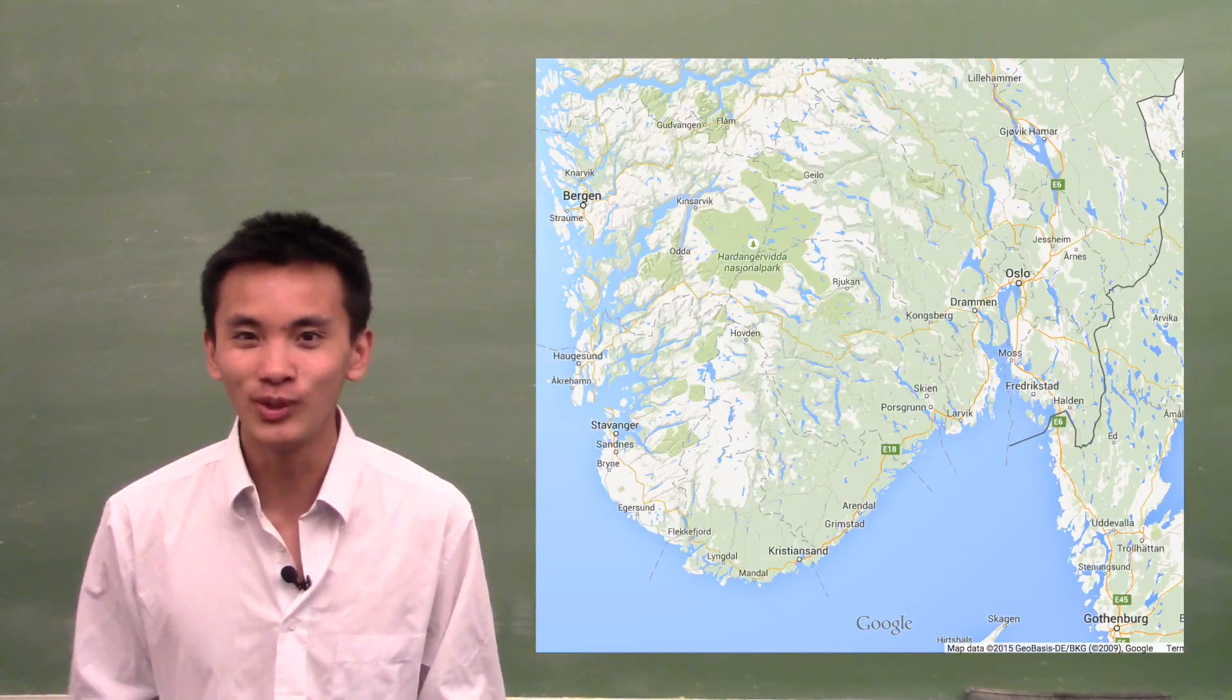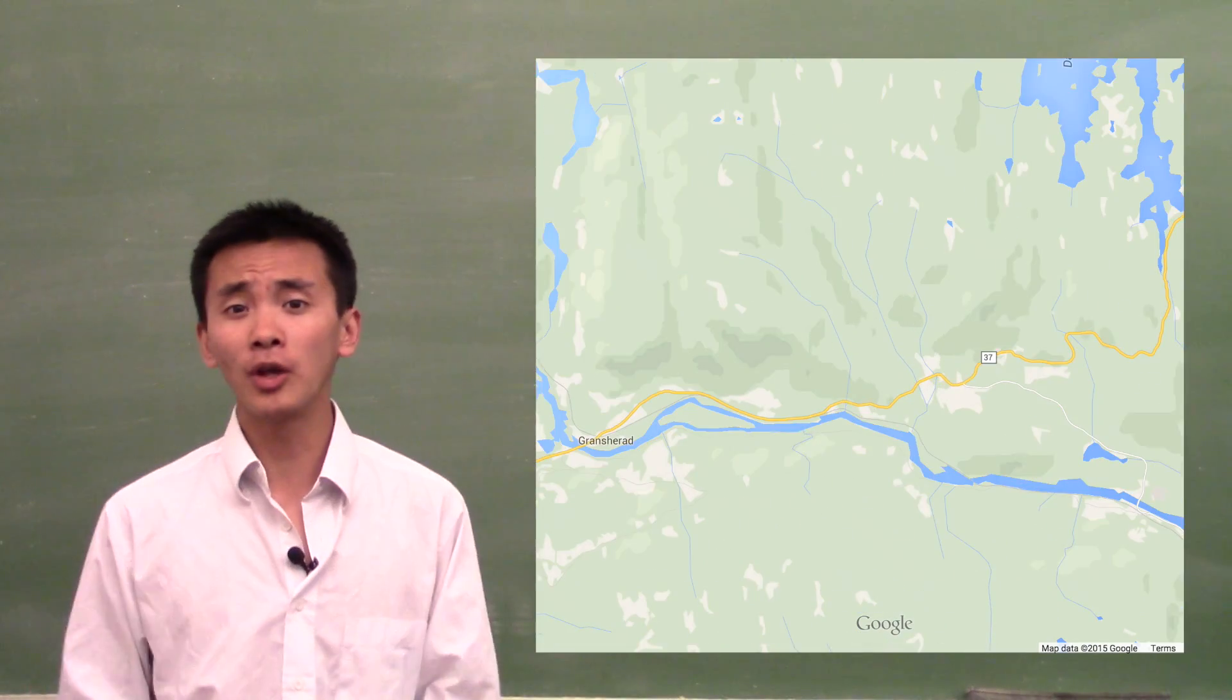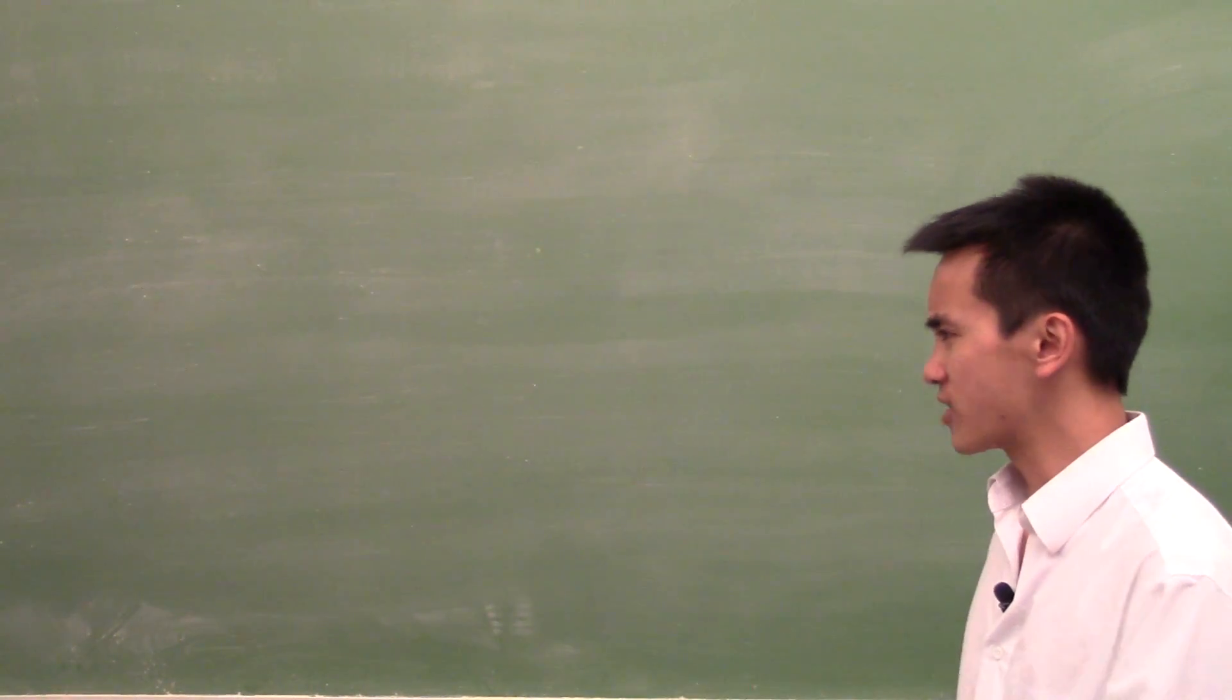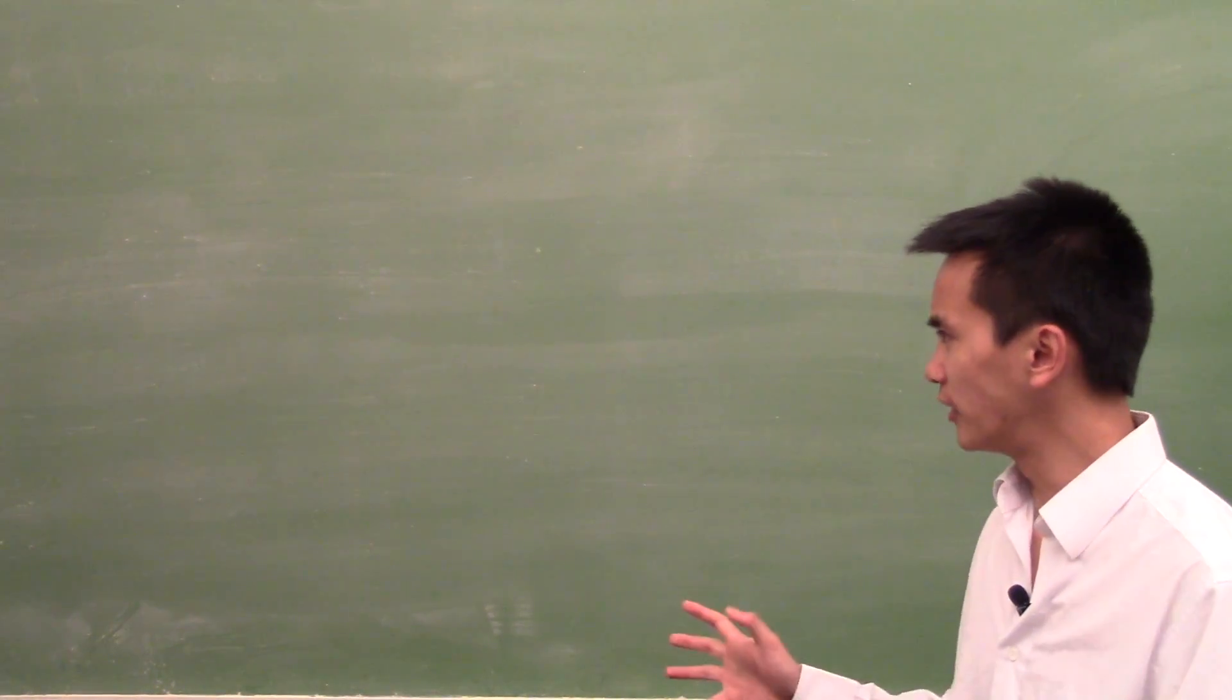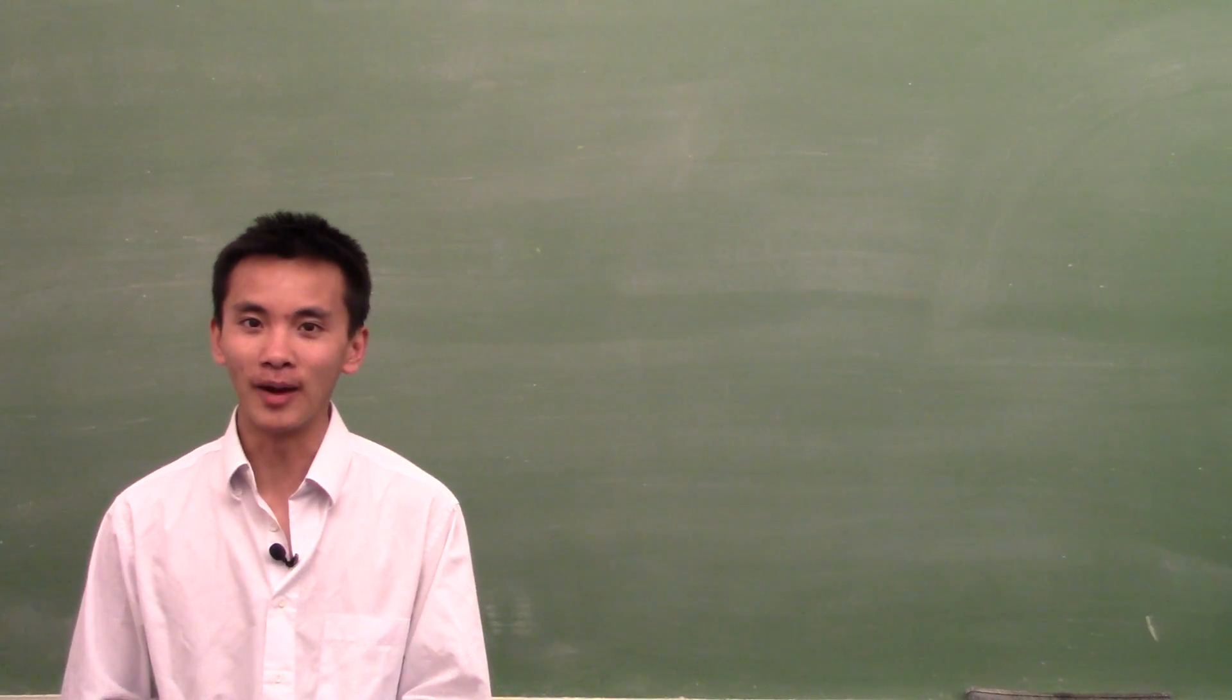For an application like Google Maps, this is crucial, because one of the most important features is this cool zoom in that you can do on your screen, and you don't want the shapes to be distorted as you zoom in. That's why Google Maps went with the Mercator projection. Wait, are you saying that the Mercator projection is the only conformal map? No, there are plenty of other conformal maps.